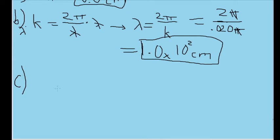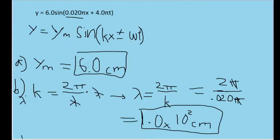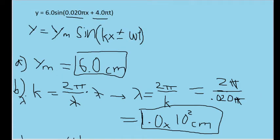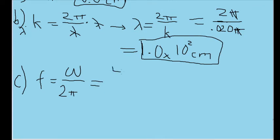Part C asks us to determine the frequency of the wave. We have a few formulas for frequency, but the one that includes the values given by this equation is the one that includes the angular frequency from this part of the wave formula. The frequency is given by the angular frequency omega divided by 2 pi. The angular frequency is the constant associated with T, the constant multiplying the time variable, which is 4.0 times pi. So that's going to be 4.0 pi divided by 2 pi.